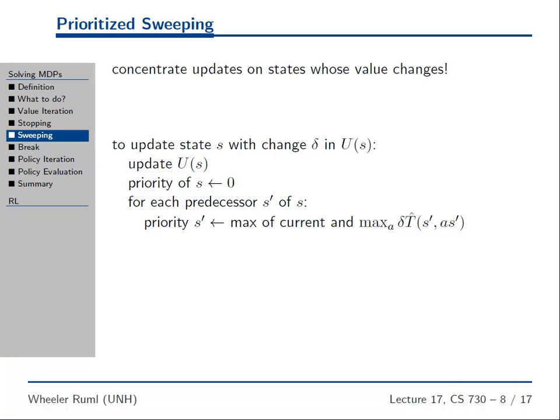If we can get the values of those states right, then our loss is going to be small. So Prioritized Sweeping says: don't go and update every single state. We should update first those states whose values are changing a lot. Concentrate updates on states whose values have changed. So we keep a Priority Queue of states that have just been updated.